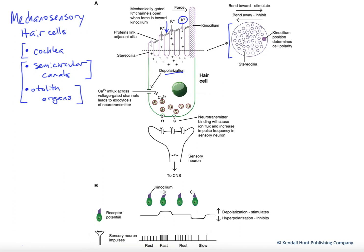The neurotransmitter then binds to our sensory neuron to generate action potentials along that sensory pathway, conveying information about either hearing, movement of the head, acceleration, or position of the head, depending upon which hair cells are being activated.